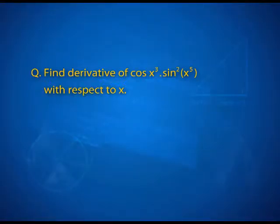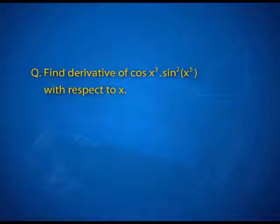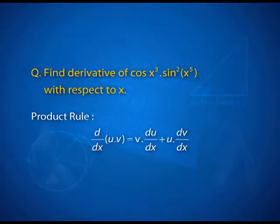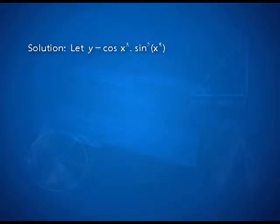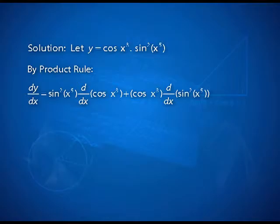One more question to wrap it up. Find the derivative of cos(x³) times sin²(x⁵) with respect to x. What you need to observe here is that there is a product involved in the function. So chain rule is what we are discussing, but we cannot neglect the presence of a product — and therefore we also need the product rule. Starting with our function y, dy/dx by the product rule gives us sin²(x⁵) times the derivative of cos(x³), plus cos(x³) times the derivative of sin²(x⁵).